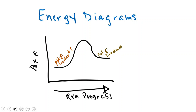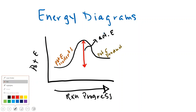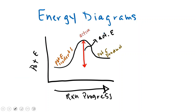The energy that is required for the reactants to begin to form products is what we call the activation energy. It is the difference in potential energy from the reactants to what we call the activated complex, or we can say the reaction intermediate. There's an intermediate phase in a reaction where atoms are close enough to each other to shift electrons and rearrange, and that's where we need the activation energy to take us from our reactants to this stage.